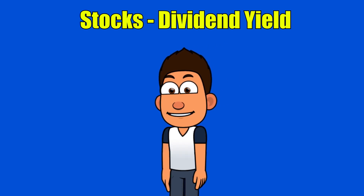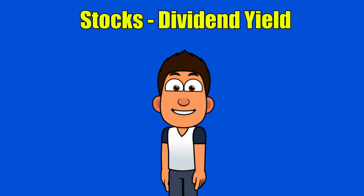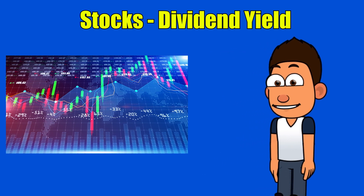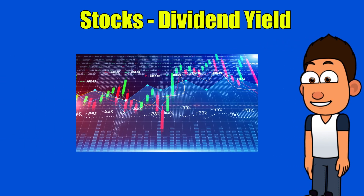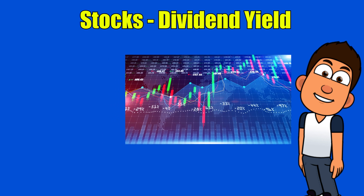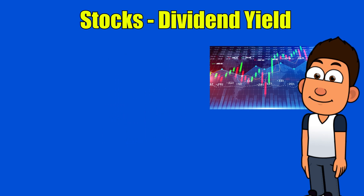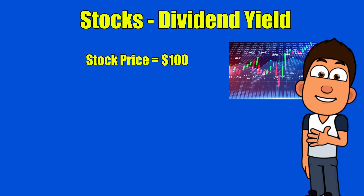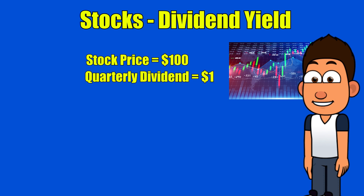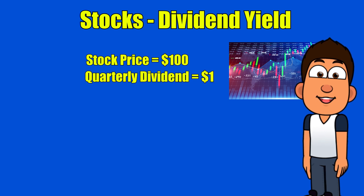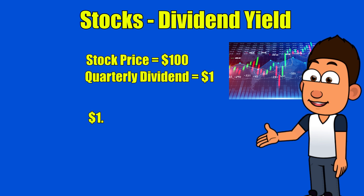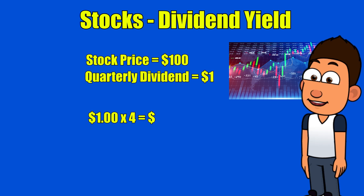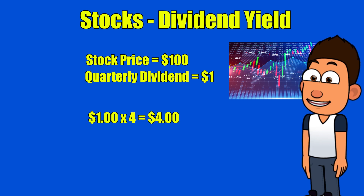Let's next look at dividend yield for stocks. Dividends are the source of income for stockholders — although the frequency varies, it's often quarterly. Dividends are a form of income paid over a regular period and can be used to calculate yield. Let's look at the percent yield formula for a dividend-paying stock: say we want to buy a stock that costs one hundred dollars and pays a quarterly dividend of one dollar.